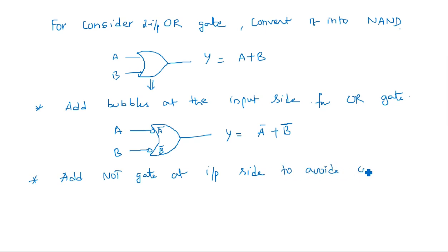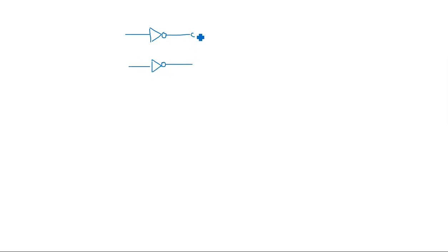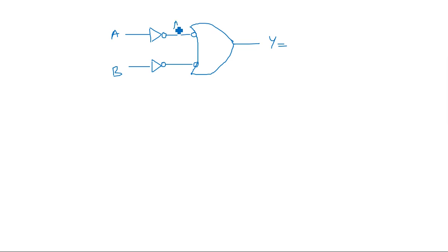So we add NOT gates at the inputs. With NOT gates feeding into the bubbled OR gate: A passes through a NOT gate becoming A-bar, then A-bar passes through the bubble becoming A again. Similarly for B. So inputs to the OR gate are A and B, giving output A + B — the same as expected. Inputs are the same, output is the same.